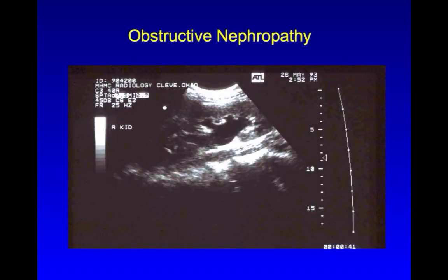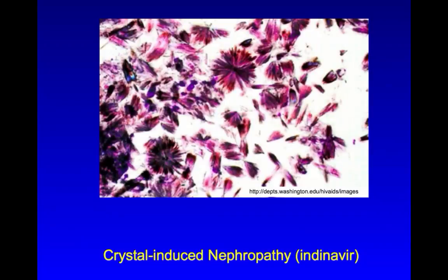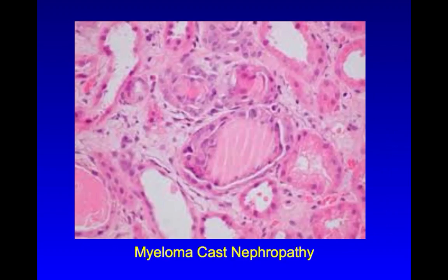In obstructive nephropathy, blockage of urine flow can occur anywhere from the ureters on down to the bladder, prostate, or urethra, resulting in hydronephrosis or dilation of the collecting system. Eventually, the back pressure can cause glomerular filtration to cease and renal tissue to be injured. Obstruction can also occur at the microscopic level with the renal tubules being blocked by crystals of drugs such as indinavir or by proteinaceous casts made up of monoclonal proteins formed in multiple myeloma.